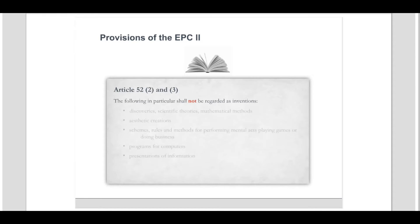Article 52, Paragraph 3 restricts the breadth of those exclusions. Specifically, Article 52, Paragraph 2 specifies: the following in particular shall not be regarded as inventions — discoveries, scientific theories, mathematical methods, aesthetic creations, schemes, rules and methods for performing mental acts, playing games and doing business, programs for computers, presentations of information. Paragraph 3 specifies that the provisions of Paragraph 2 shall exclude patentability of the subject matter or activities referred to in that provision only to the extent to which a European patent application relates to such subject matter or activities as such.